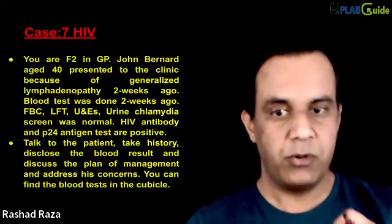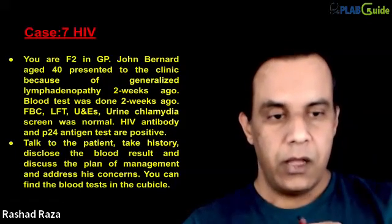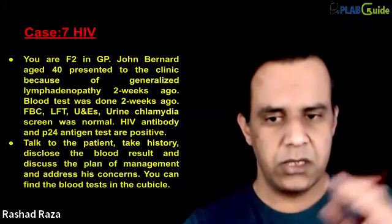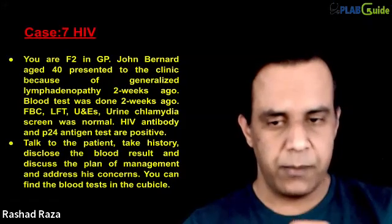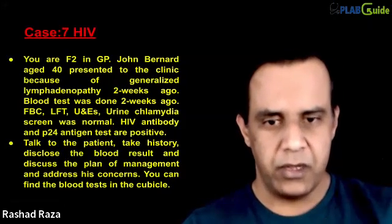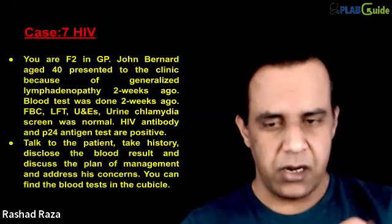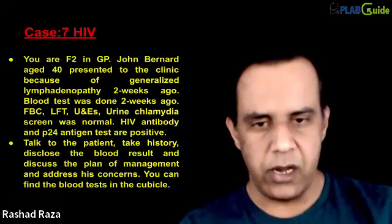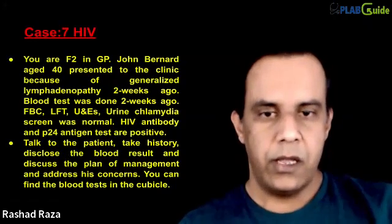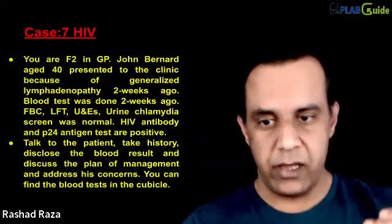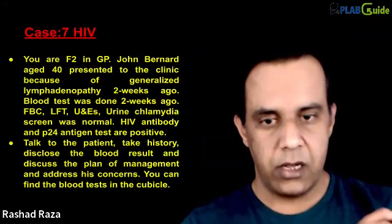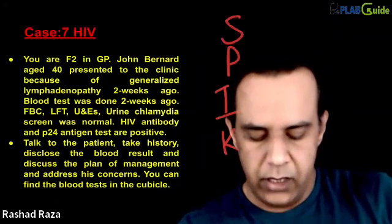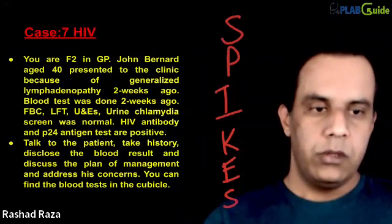We need to follow the SPIKES protocol. Setting — ask why they needed those investigations and what symptoms they had. Ask if they thought anything about their diagnosis after giving the blood sample, and what they expected or think it could be. Then explore their general health and how they had been since they last came to you. Then we explain the result. There is room to be flexible and use this protocol according to the requirement, stressing more in some areas than others.